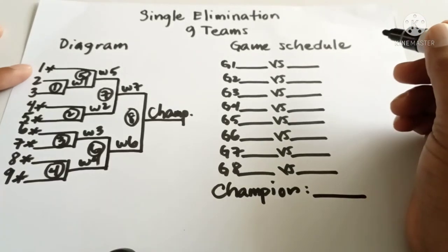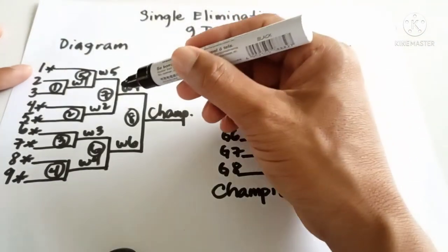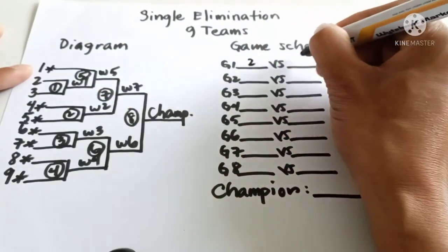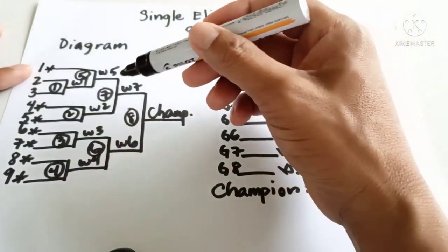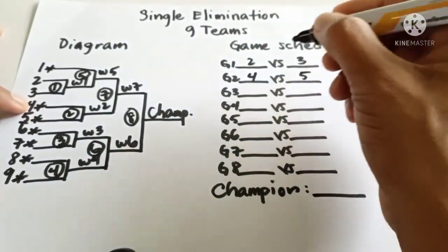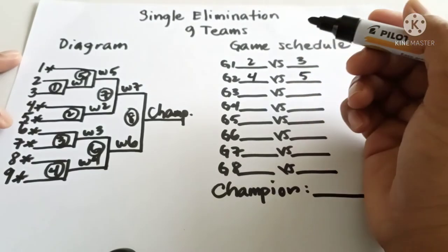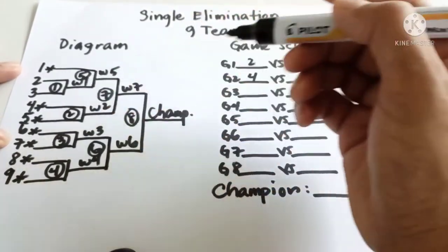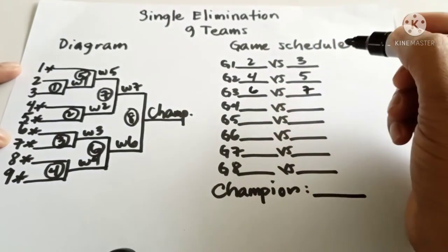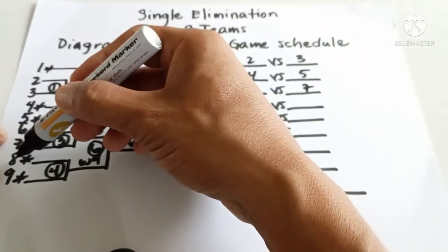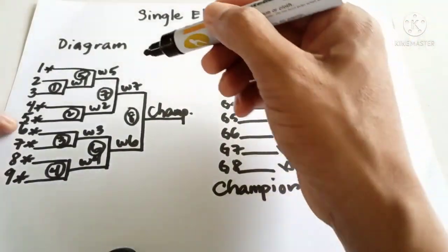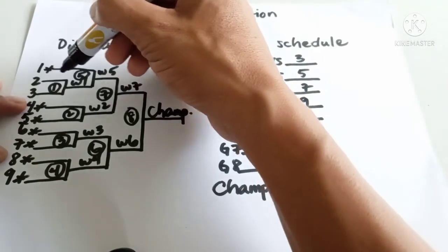Now let's interpret the diagram. In game one we have two versus three. In game two we have four versus five. In game three we have six versus seven. In game four we have eight versus nine. In game five we have one versus winner one.